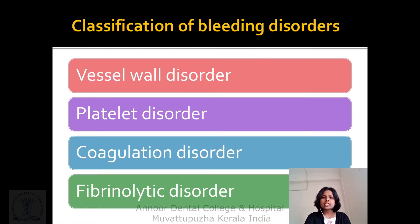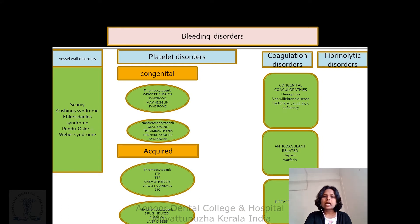The classification of bleeding disorders includes vessel wall disorders, platelet disorders, coagulation disorders, and fibrinolytic disorders, according to the textbook of Berkens of Oral Medicine. Under vessel wall disorders there is scurvy, Cushing syndrome, Ehlers-Danlos syndrome, and Rendu-Osler-Weber syndrome. Platelet disorders are divided into congenital and acquired, including thrombocytopenic purpura and non-thrombocytopenic platelet disorders, idiopathic thrombocytopenia, and thrombotic thrombocytopenia. Coagulation disorders include hemophilia A, B, and C, and Von Willebrand disease.